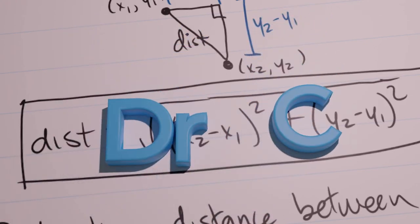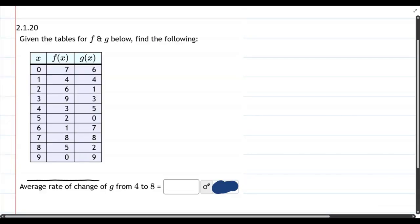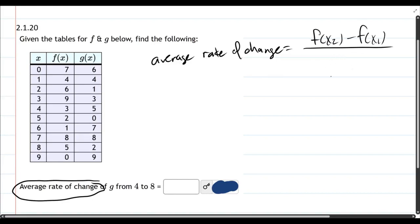This problem, we're going to compute an average rate of change, so we need the formula for that, which is f(x₂) - f(x₁) over x₂ - x₁.